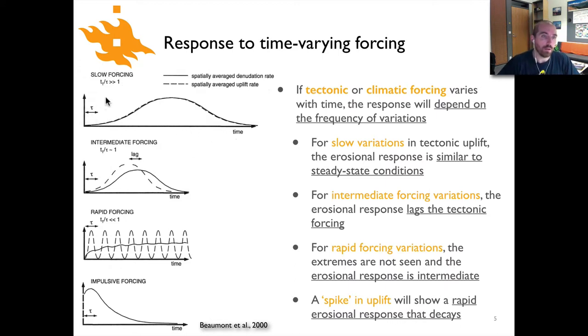For the first case shown at the top, we have a time scale which is tt divided by tau, that reference time scale we just saw on the previous slide. If this ratio is much greater than one, it means the tectonic time scale is much longer than the time scale associated with tau. What we see is that the system is able to keep up, so if we change the uplift in the tectonic model, the erosion rate basically follows along and proportionally changes. That's for slow variations.